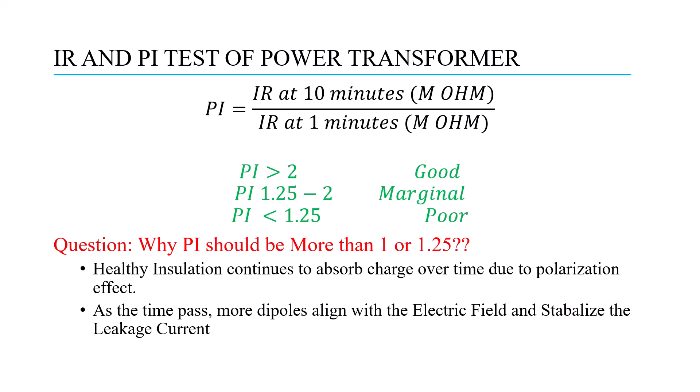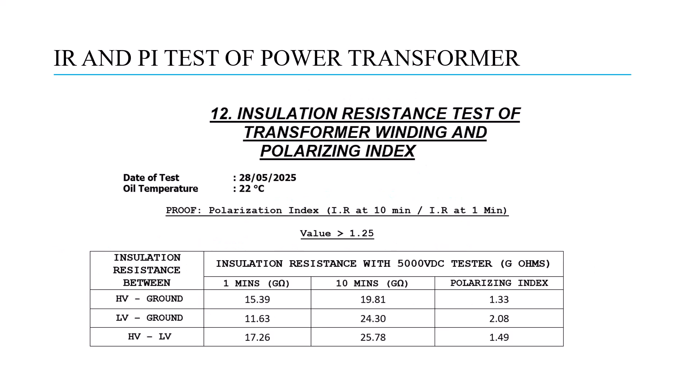The answer is that healthy insulation continues to absorb charge over time. As we inject voltage for 10 minutes, healthy insulation absorbs the charge due to the polarization effect. As time passes, more dipoles align with the dielectric field and stabilize the leakage current. Therefore, the leakage current is reduced and the insulation resistance gets strengthened with time, since we are injecting DC voltage.